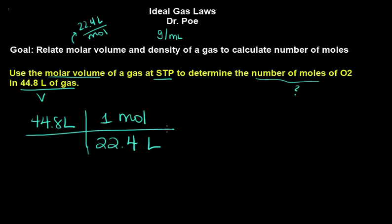And when we do this, do the math, the liters are going to cancel. We're left with moles. Hey, guess what? That's what we wanted. We wanted to determine the number of moles. So this is going to be 2.00 moles of O2.